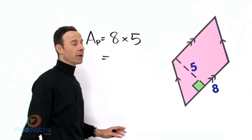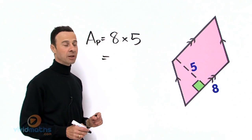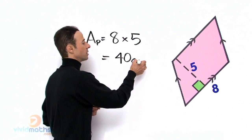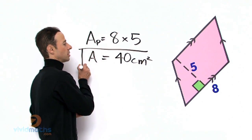So the total area in pink, in vivid pink, all in there in that parallelogram is 8 times 5 which is 40cm squared.